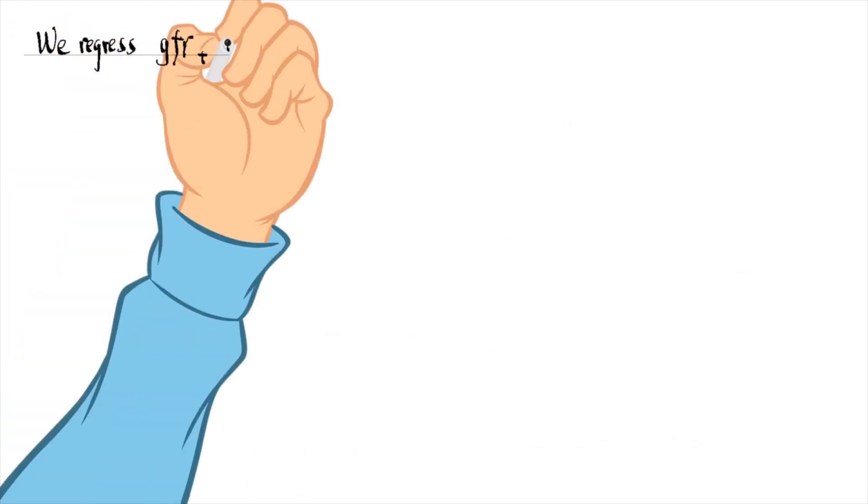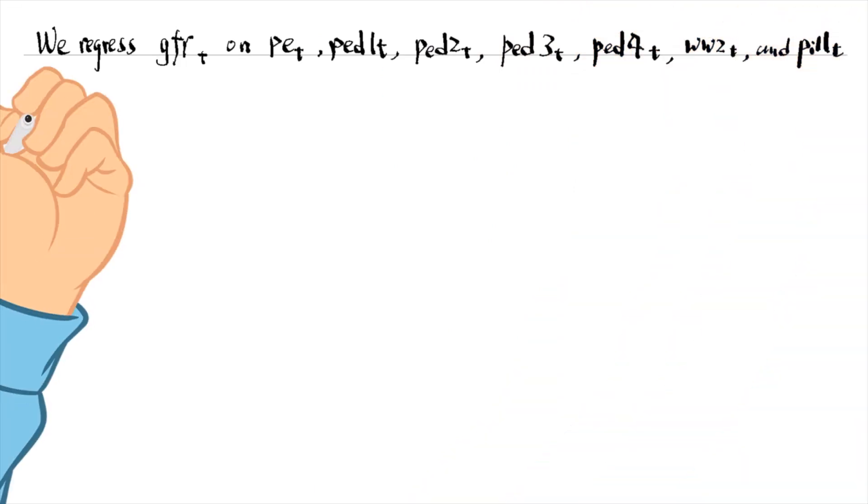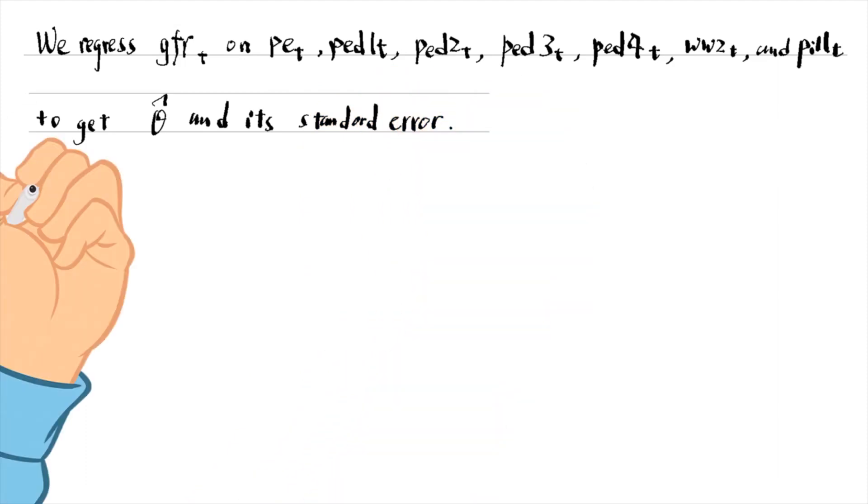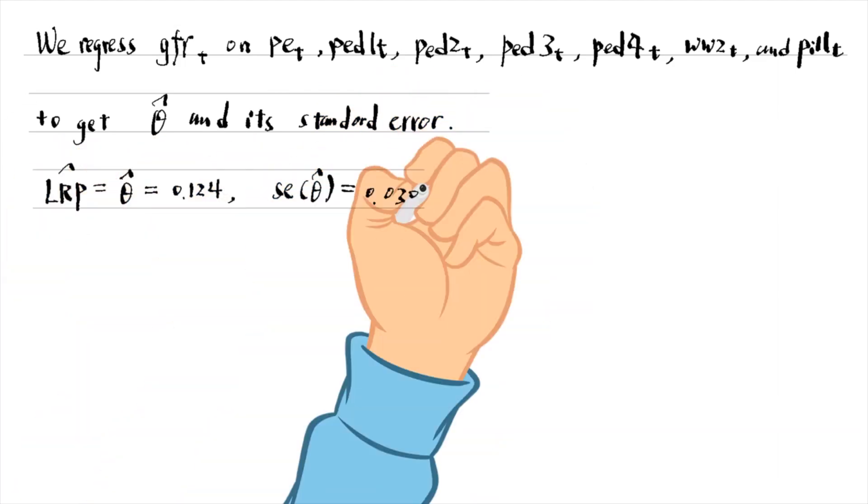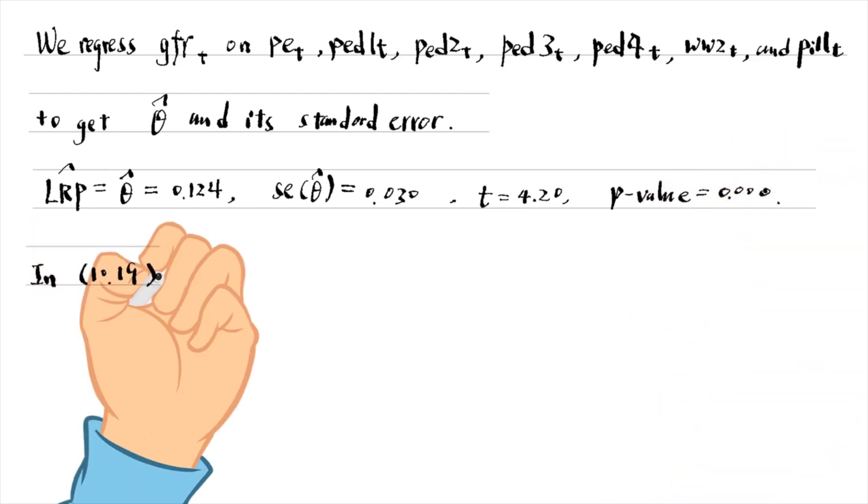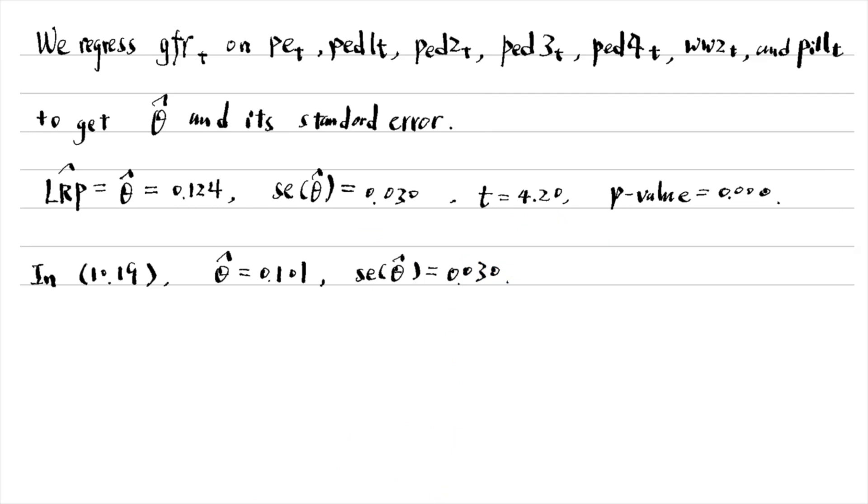From the new regression, we can obtain the estimate for the long-run propensity and its standard error, t-statistic and p-value. Compared to those values in equation 10.19, the long-run propensity increases when we consider more time lags. The standard error is similar.